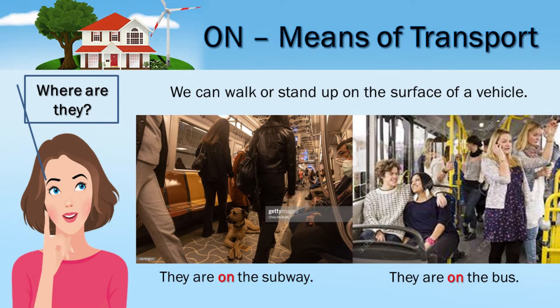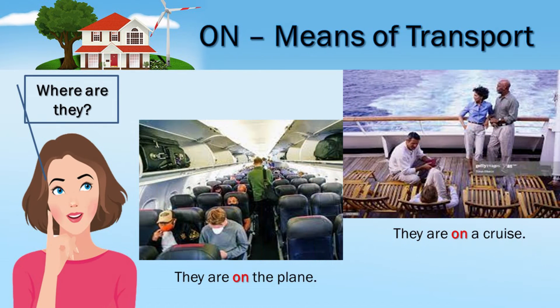On — means of transport. We can walk or stand up on the surface of a vehicle. Where are they? They are on the subway. They are on the bus. They are on the plane. They are on a cruise.